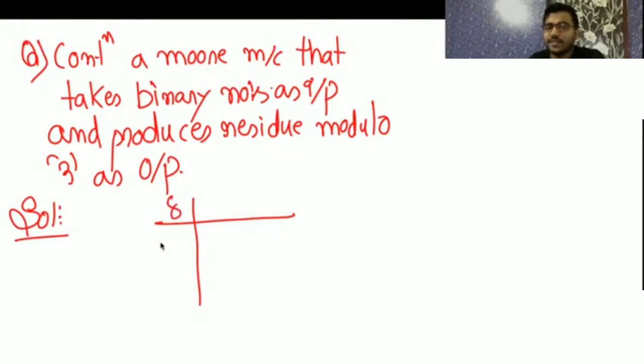This is the DFA. To divide by 3, we can create 3 states: Q0, Q1, Q2. Here, the symbols that we can write are 0 and 1.